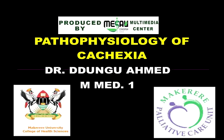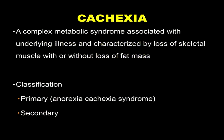Cachexia is a complex metabolic syndrome largely associated with an underlying illness, which is characterized by loss of skeletal muscle with or without loss of fat mass. It's largely irreversible. There are two types that we know: primary and secondary cachexia.